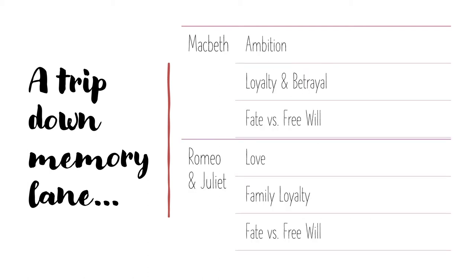Now think back to Romeo and Juliet. You may remember the following theme topics: love, family loyalty, and fate versus free will. Notice how some of these theme topics overlap with Macbeth. What might that say about Shakespeare's work? How do these topics relate to the universal human experience?